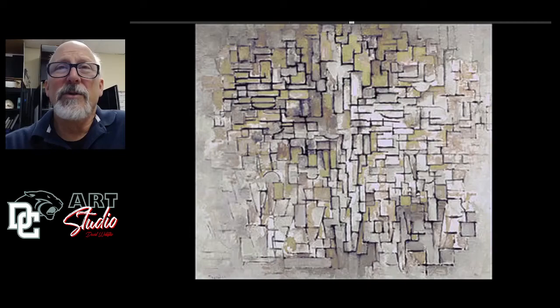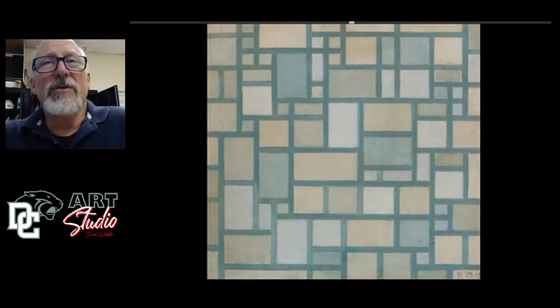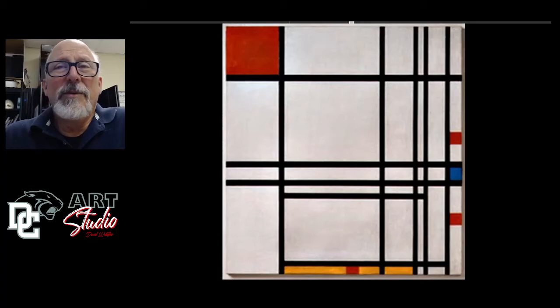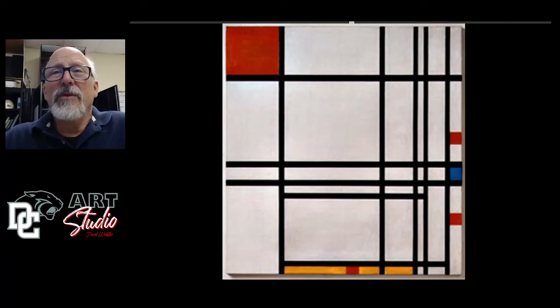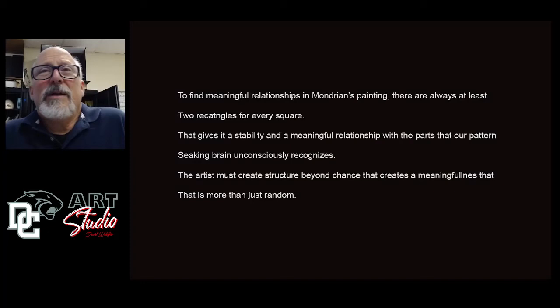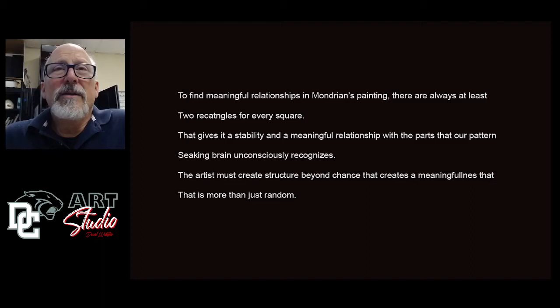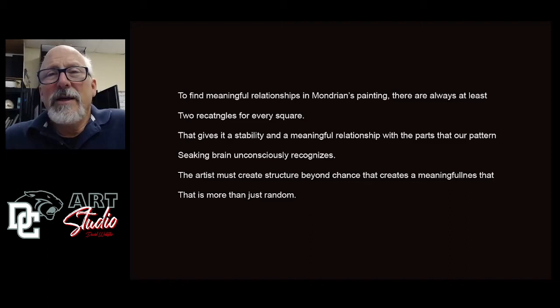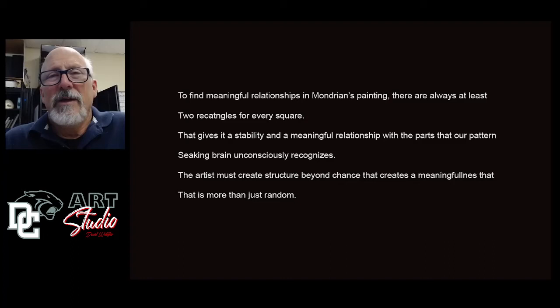In the end, he ends up with just horizontal and verticals, rectangles and squares, a simple color scheme. He ended up eliminating most colors except for a color triad of the primary colors, and white and black — black lines against a white background with colored rectangles and squares. He had a meaningful relationship in the paintings based on two rectangles for every square, giving a stability that our pattern-seeking brain unconsciously recognizes. He was trying to elaborate on what triggers our minds and makes us respond to a painting, honing it down to its most primary factors and eliminating everything else.